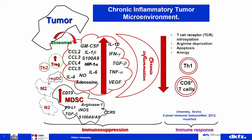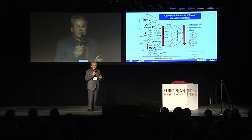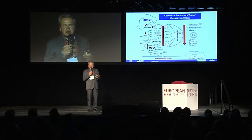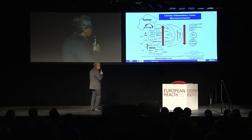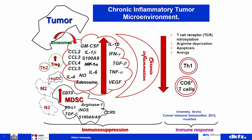Moreover, tumor cells can also produce these factors and can produce so-called tumor-derived microvesicles — exosomes — also converting normal myeloid cells into immunosuppressive myeloid-derived suppressor cells.